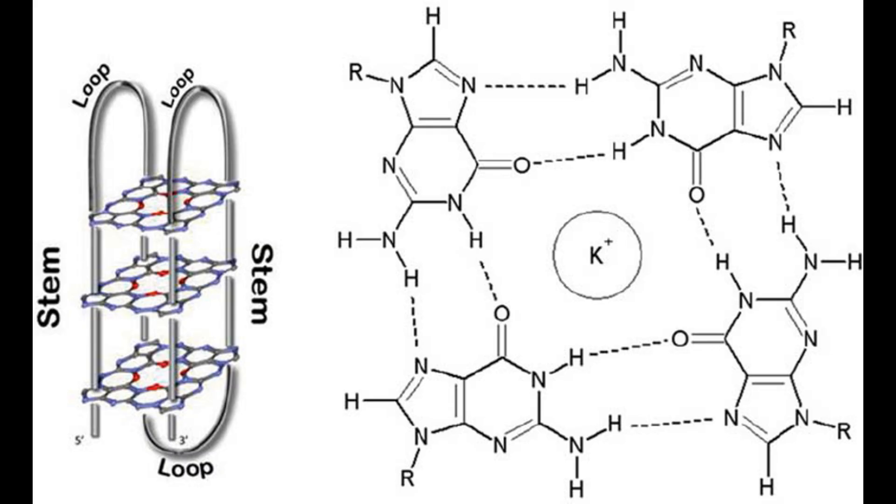G4 DNA is formed by strands rich in guanine, hence the name. It can be formed from four separate strands, but also by two or even one long strand that loops and folds back onto itself, forming the structure.